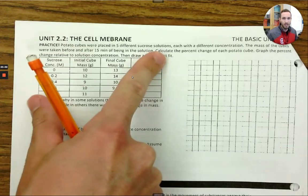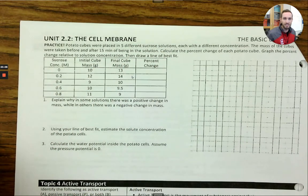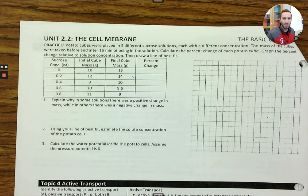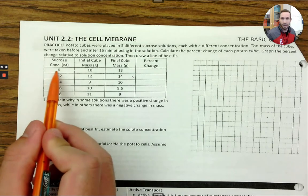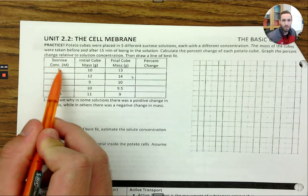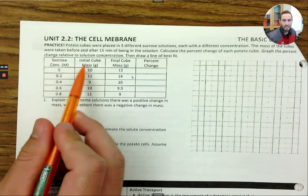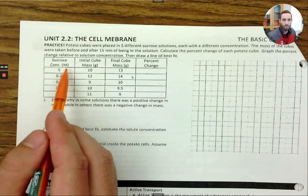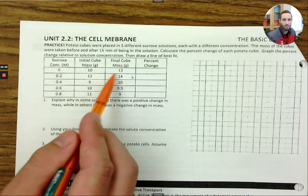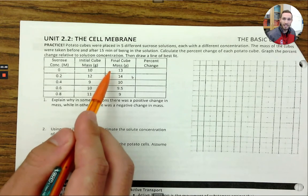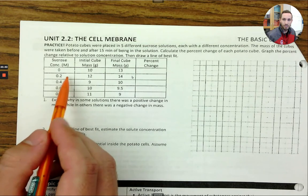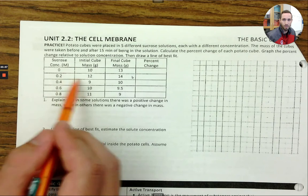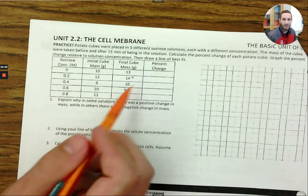In this scenario, potato cubes were placed in five different sucrose solutions each with a different concentration. The mass of the cubes was taken before and after 15 minutes of soaking. The question asks you to calculate the percent change in mass for each cube and graph the percent change relative to solution concentration, then draw a line of best fit. The sucrose concentrations ranged from 0 to 0.8 molar, with each cube starting at 10 grams.